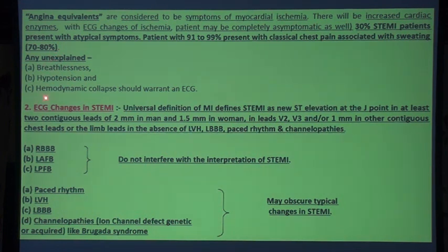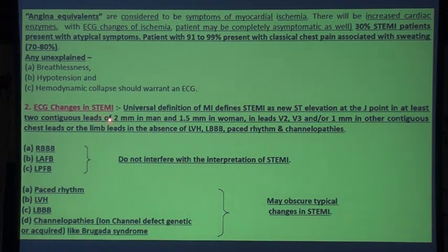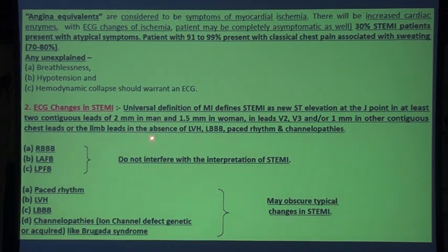The second point to diagnose STEMI is ECG changes. The universal definition of MI defines STEMI as new ST elevation at the J point in at least two contiguous leads of 2 mm in men and 1.5 mm in women in leads V2 and V3, or 1 mm in other contiguous chest leads or limb leads, in the absence of left ventricular hypertrophy, left bundle branch block, and Brugada syndrome.